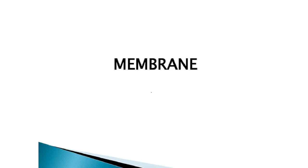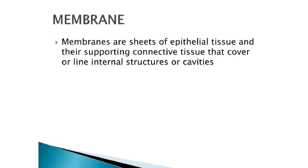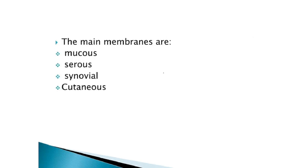Now we will see the different types of membranes in our body. Membranes are sheets of epithelial tissue. As I covered when teaching epithelial tissue, it is found as the outer covering of the body and lining the inner surfaces and cavities. Membranes have a watery or mucous surface. They are made up of epithelial tissue and supporting connective tissue, and are found lining internal structures or cavities. Mainly, membranes are divided into four types: mucous membrane, serous membrane, synovial membrane, and cutaneous membrane.